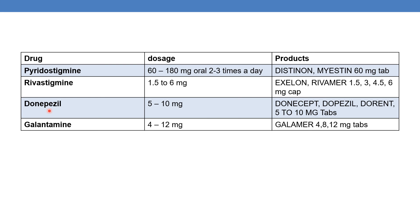The next is donepezil. It is available in the dosage range of 5 to 10 mg. Examples of marketed products are Donycept, Donepezil, and Dorant, available as 5 mg to 10 mg tablets.